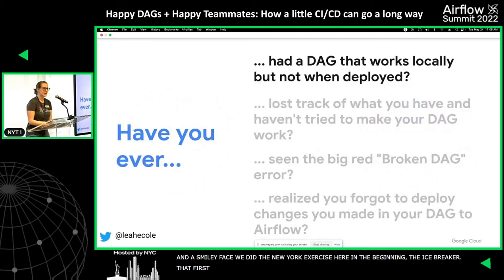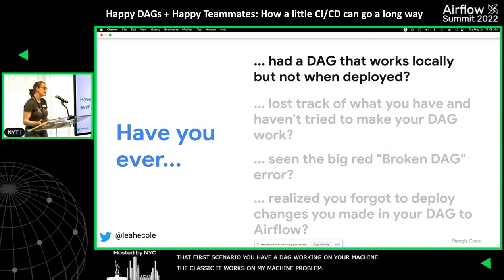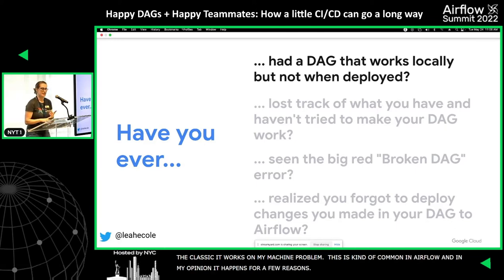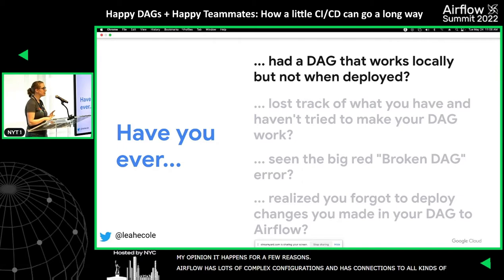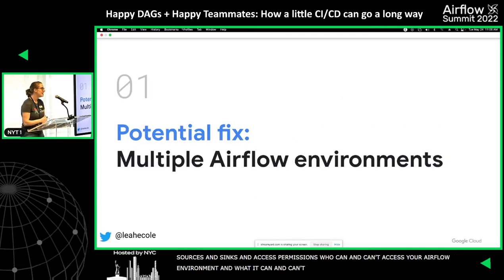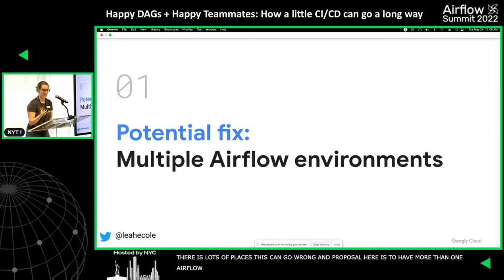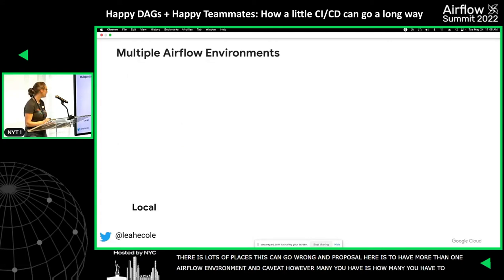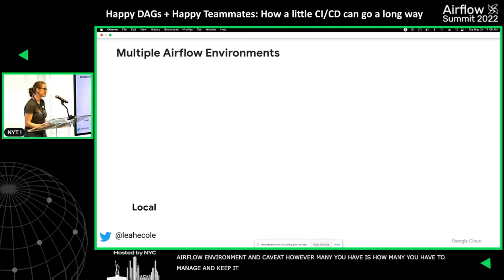That first scenario — you have a DAG that's working on your machine — is the classic 'it works on my machine' problem. This is common in Airflow and in my opinion it happens for a few reasons. Airflow has a lot of complex configurations, connections to all kinds of data sources and sinks, and you have to manage permissions for who can and can't access your Airflow environment and what the environment itself can and can't access. So there are a lot of places where this can go wrong. My proposal is to have more than one Airflow environment.